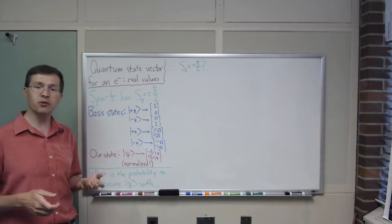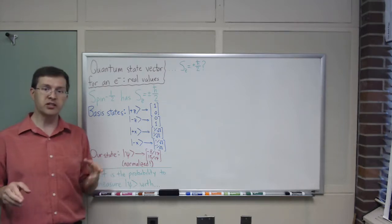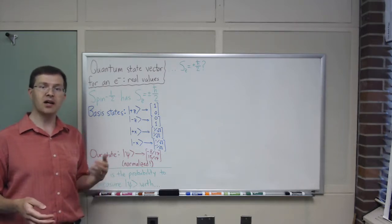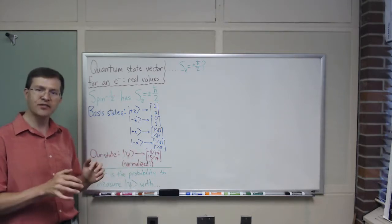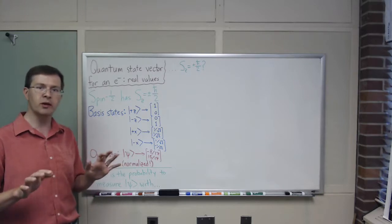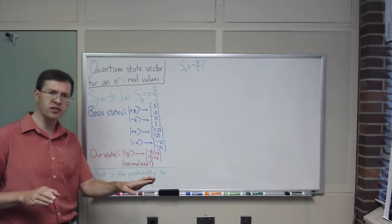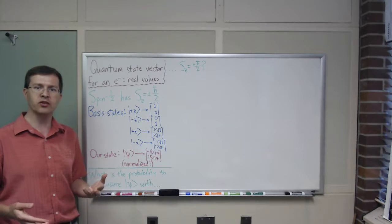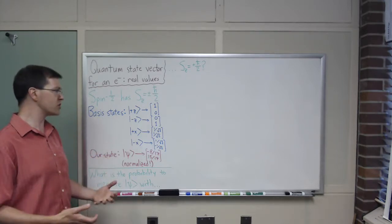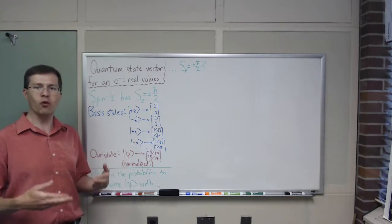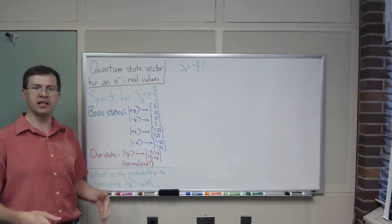The plus x state we're going to represent by convention as 1 over square root of 2 and 1 over square root of 2 as the two components. Minus x is 1 over square root of 2 and negative 1 over square root of 2. We could do the same thing with plus or minus y states, but to do that it turns out we need complex numbers. Some of the components will be imaginary, and in this video, I want to focus on just the real number behavior of things.